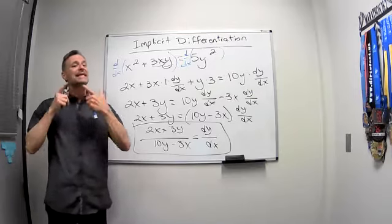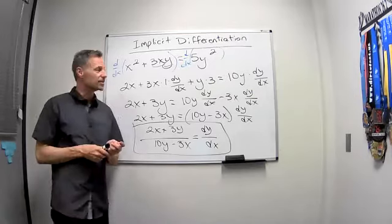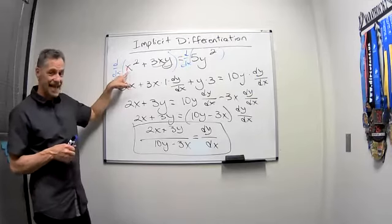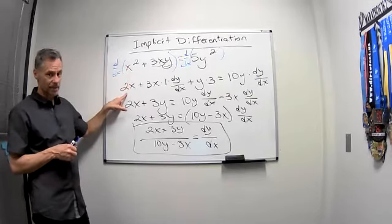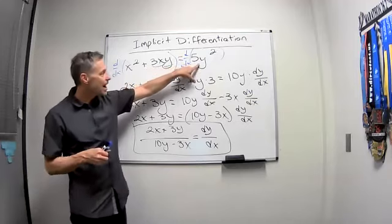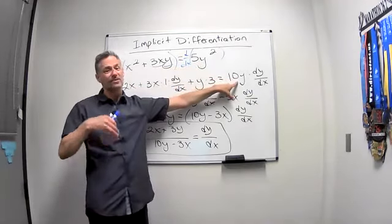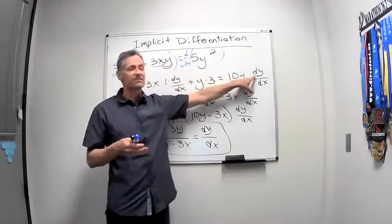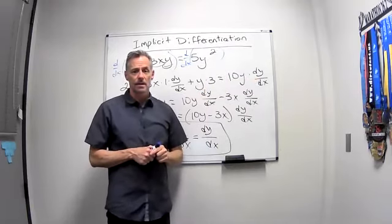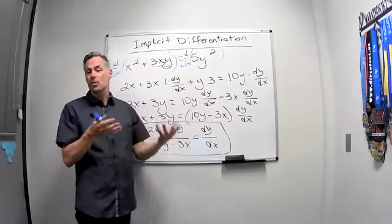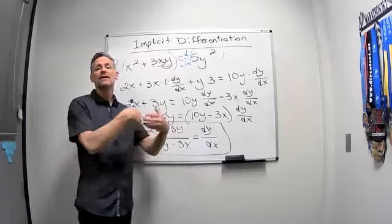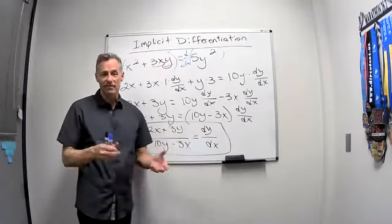So remember the key to implicit differentiation. If you're taking the derivative with respect to x, if it's an x you're taking the derivative, just take it normally. But if it's a y, take that derivative normally, but then you have to say times dy/dx. And then as in this problem, if you have more than one dy/dx, get them on the same side, factor them out, and then divide away whatever the coefficient is.